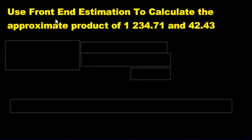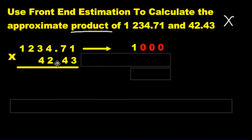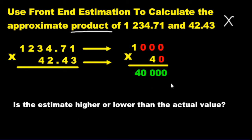Use front end estimation to calculate the approximate product. Product means multiply. We're going to convert this number — 1,000. Change that one to 40. Multiply 4 and 1, then add four zeros: you get 40,000. Is this estimate higher or lower than the actual amount? Since we lowered this number and lowered that number, our estimate has been lowered compared to the real value.